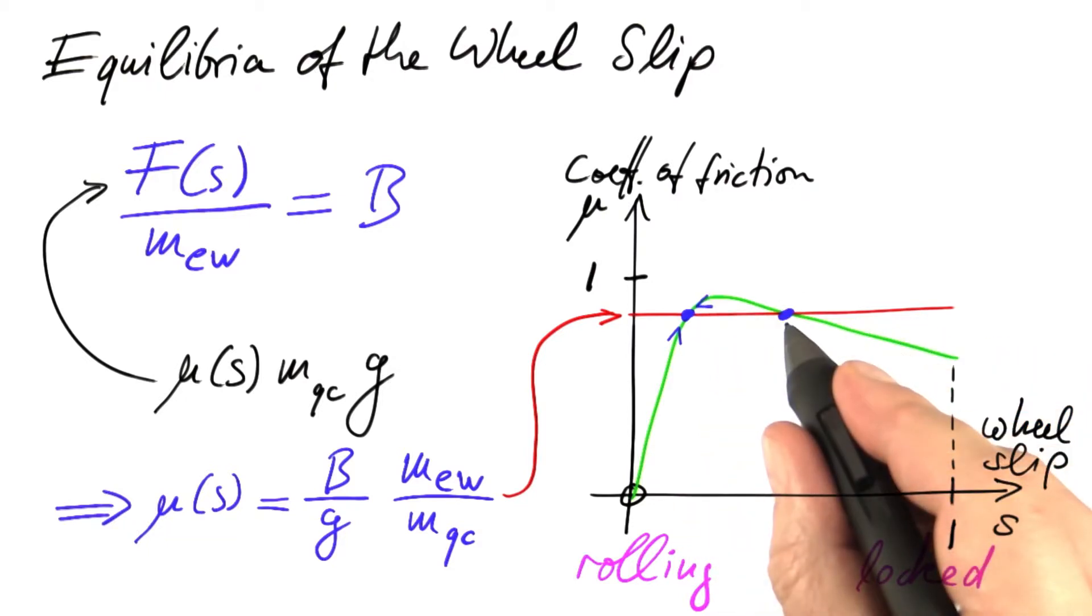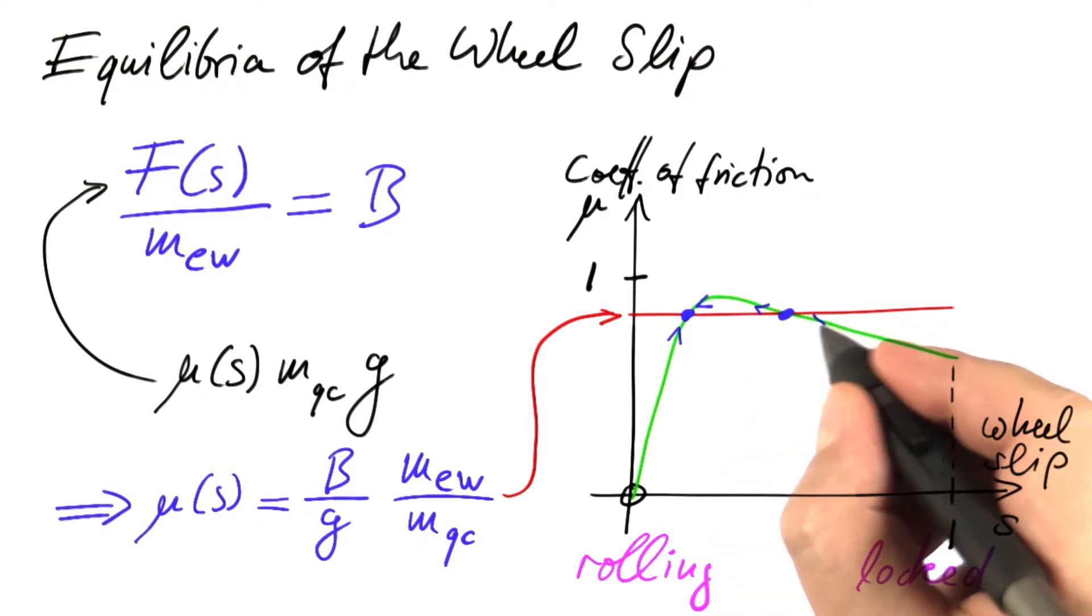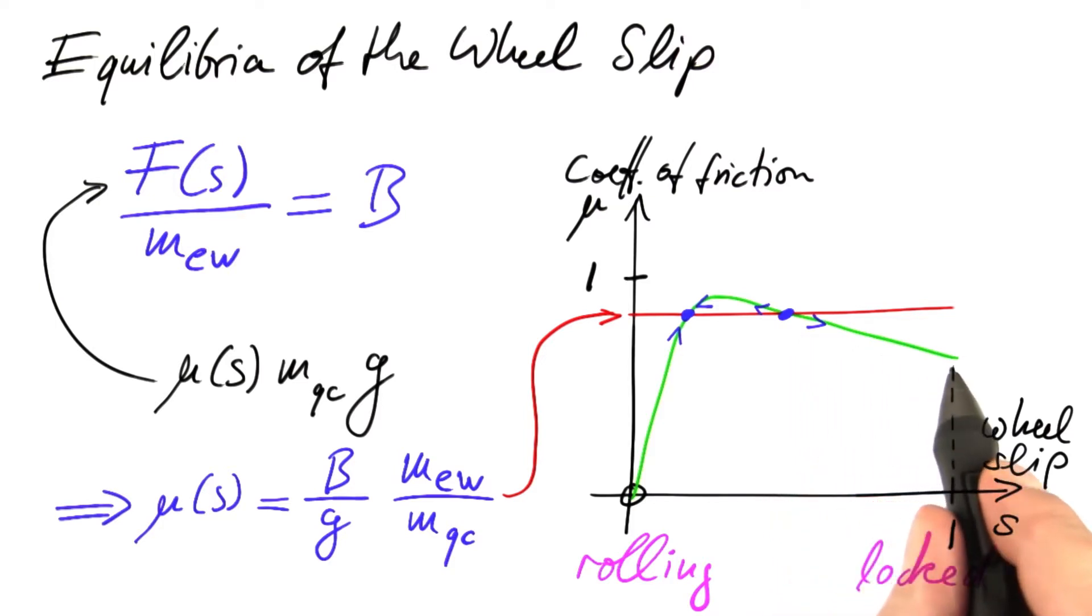For this point, it's the other way around. If we are slightly below, we keep on moving down. If we are slightly above, we keep on moving up. So once we are past that point, we inevitably run into locking, a wheel slip of one.